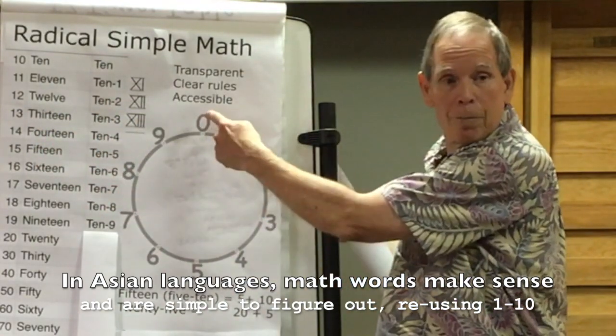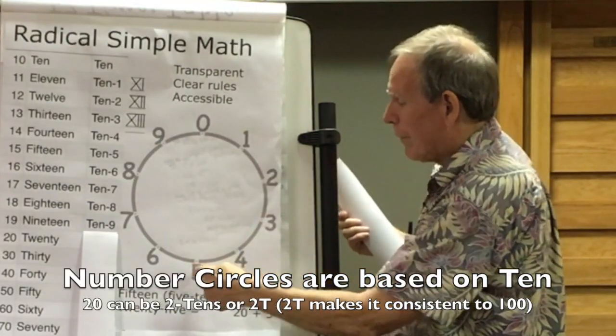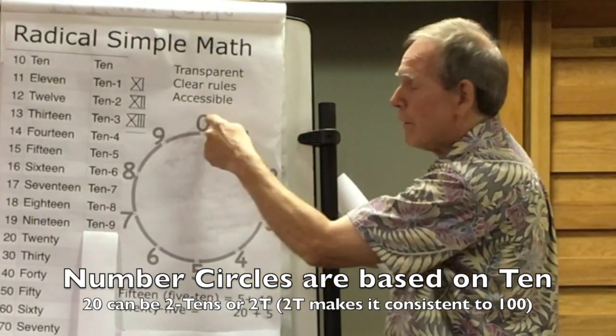And I use the number circle, so you go around. Eight, nine, ten, ten-one, ten-two, ten-three, ten-four, ten-five, ten-six, ten-seven, ten-eight, ten-nine, two tens.